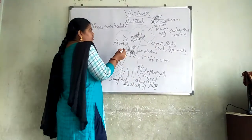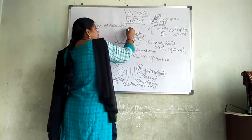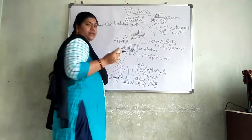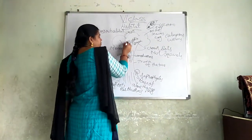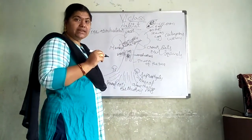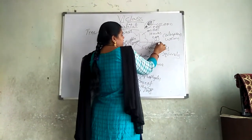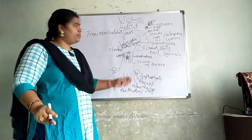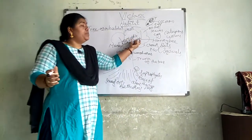Also, I forgot to mention — in the middle of the branches, birds will form nests to lay eggs. And another important one: honey bee nests. Honey bees will also form their nests in the middle of the branches.